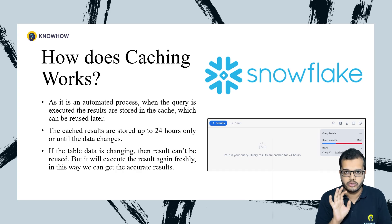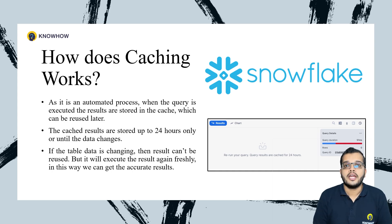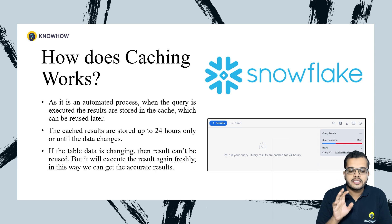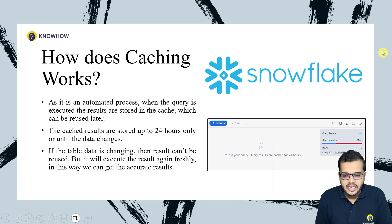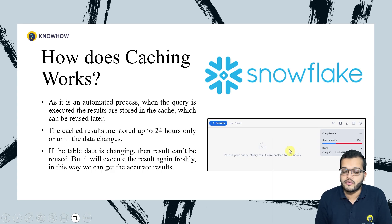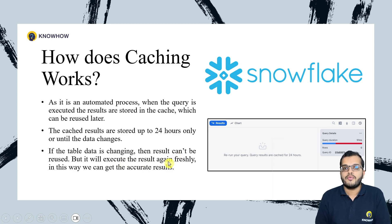If the table data is changing — for example, if I have updated values or done some modifications in my table — then the cached result cannot be reused, because the result is now different. As you can see in the picture here, results are captured for only 24 hours. Whenever we re-execute a fresh query, it will get accurate results.